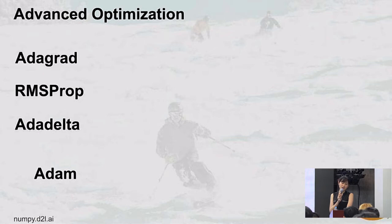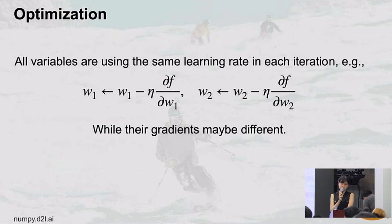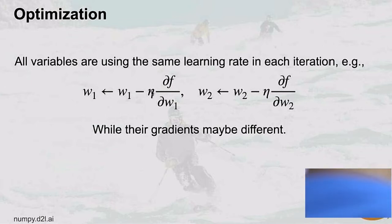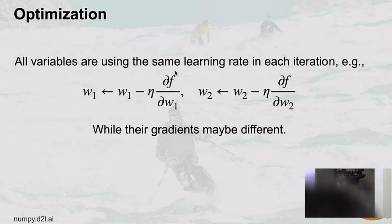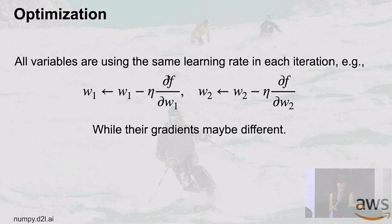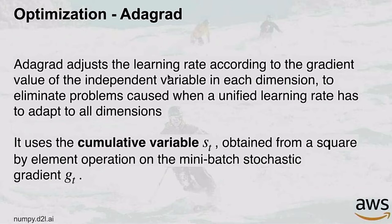Here are the four optimization algorithms I'm going to talk about today: AdaGrad, RMSProp, AdaDelta, and Adam — all pretty famous and useful. The intuition is this: if we have two variables w1 and w2 with a unified learning rate η, we update them with their own gradients, which can be of different scales. Some gradients may be close to zero, others can be very large, causing the weights to diverge in different dimensions.